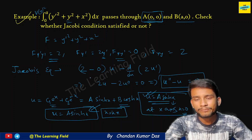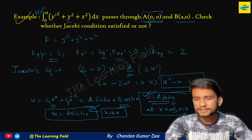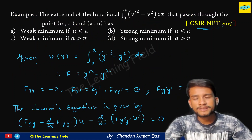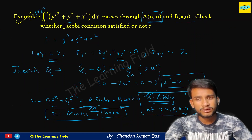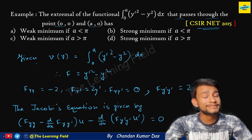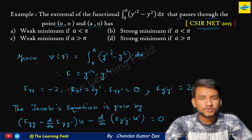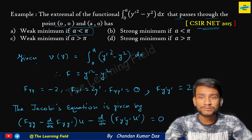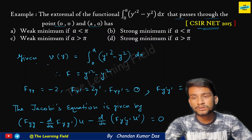Now let's go to the CSIR NET 2015 problem. If you cannot understand, you can comment in the comment section below. The extremal of the functional integral from 0 to a of (y'² − y²) dx, passing through (0,0) and (a,0), yields a quick minimum if strong minimum — we need to determine the conditions. This is why we need Jacobi's condition: there is no other concept applicable here to solve this problem properly.